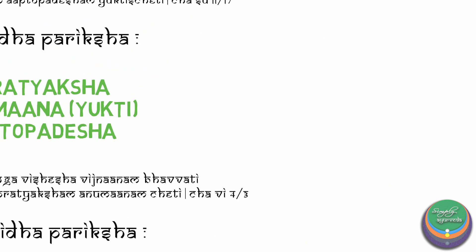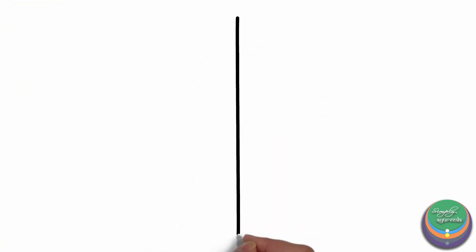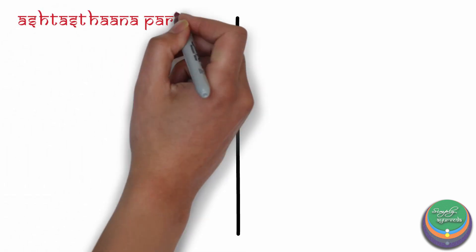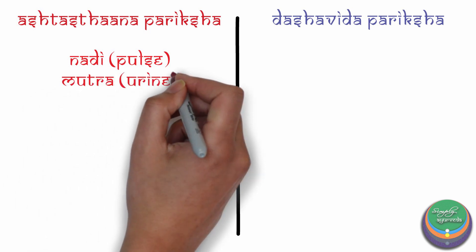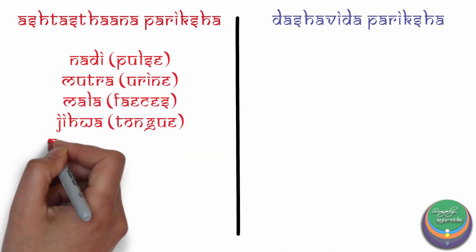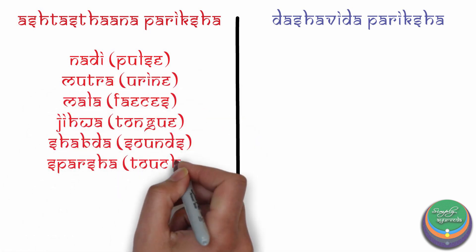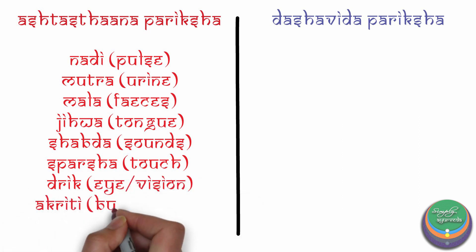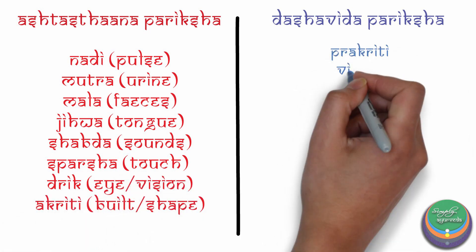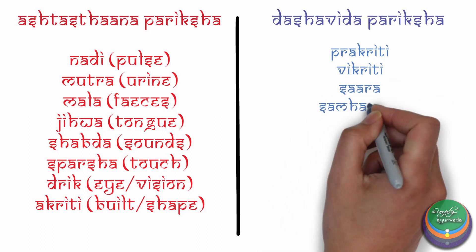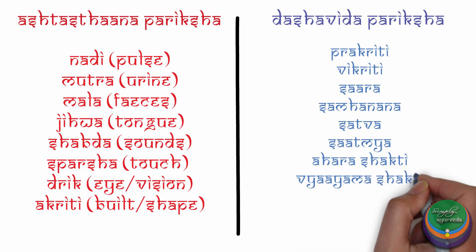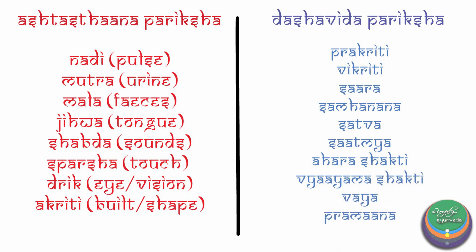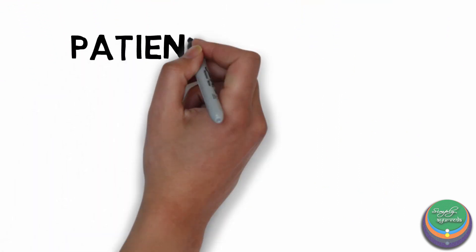Other aspects where Pariksha are explained are the Ashtasthana Pariksha and the Dasavida Pariksha. The eight-fold examinations include Nadi, Mutra, Mala, Jihva, Shabda, Sparsha, Drik, and Akriti. The tenfold examinations include Prakriti, Vikriti, Sara, Samhanana, Sattva, Satmya, Ahara Shakti, Vyayama Shakti, Vaya, and Pragaana. These are some of the important and basic references of Pariksha in the Samhitas.